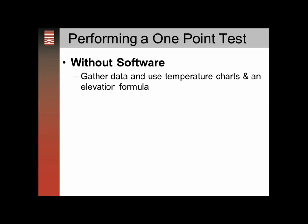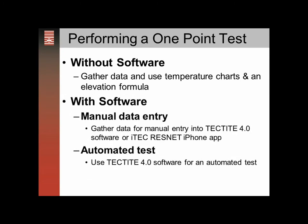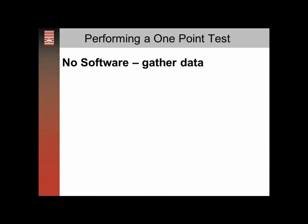You can do the test without software — you can gather the data in the field and use the temperature charts and an elevation formula to do those calculations without software. You can also do it with software using manual data entry, entering data into either the Tektite 4.0 software or the iTech ResNet iPhone app, or you can do an automated test using the Tektite 4.0 software. I think you'll find that if you try an automated test, in the long run it's going to be easier, as the calculations happen automatically and you'll have a report you can print off.